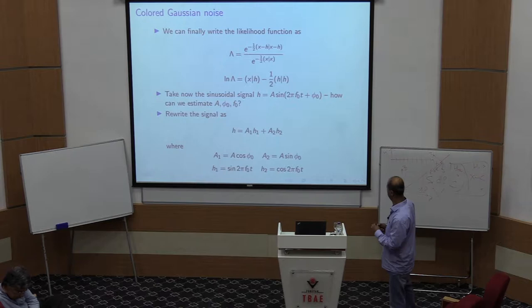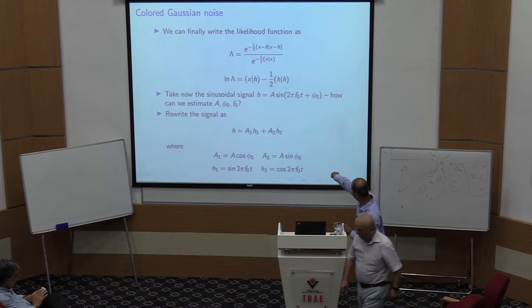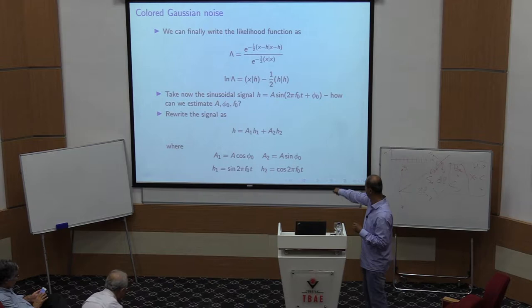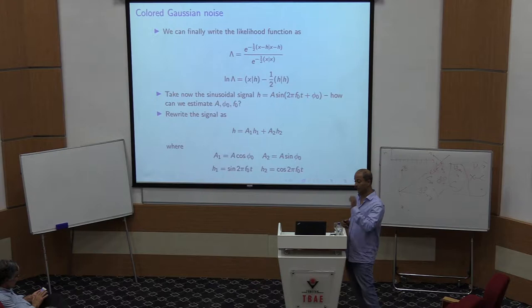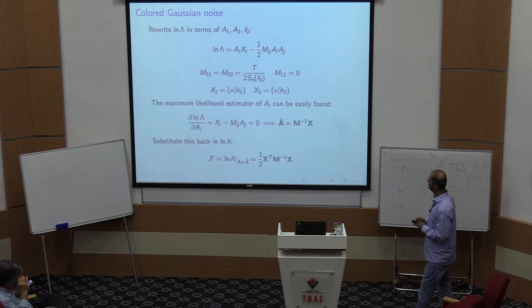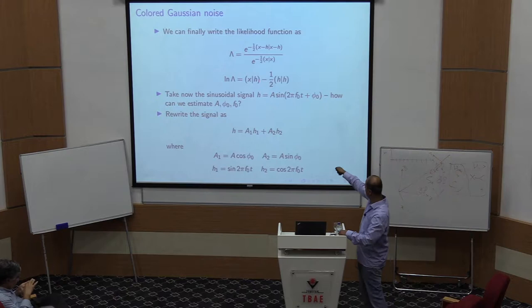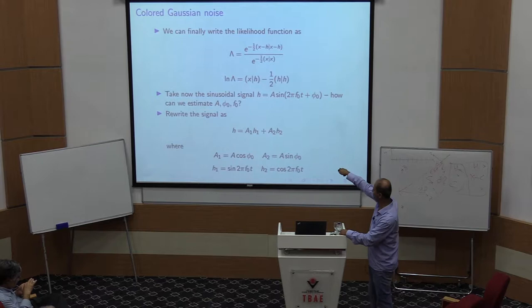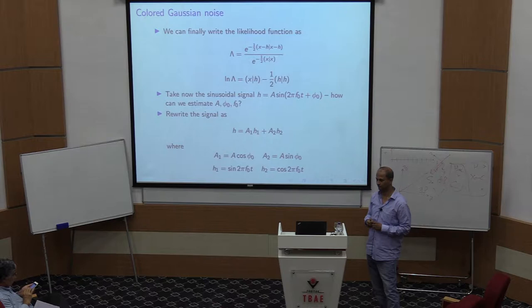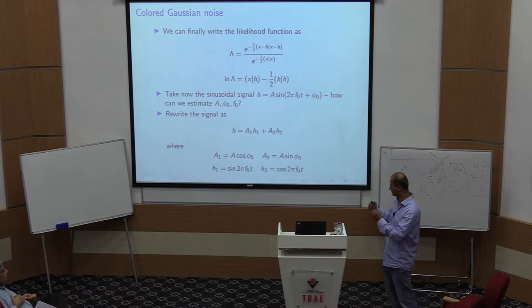The important thing is that we now have two kinds of parameters: the amplitude and initial phase, which appear in a1 and a2, and the frequency, which appears within the phase. Moreover, h depends linearly on a1 and a2. This means the log of lambda is a quadratic function of these amplitudes a1 and a2.